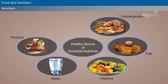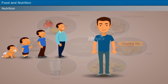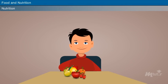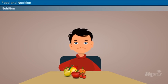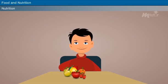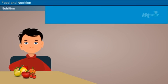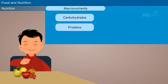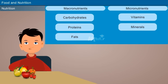Nutrients are components of food required by the body in order to grow, reproduce, and lead a healthy life. Basically, over 40 essential nutrients are supplied by the food we eat. They are primarily classified as macronutrients and micronutrients.